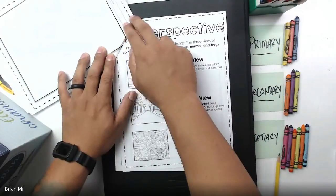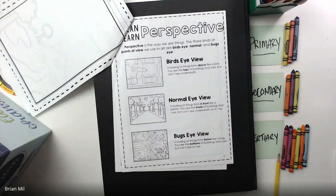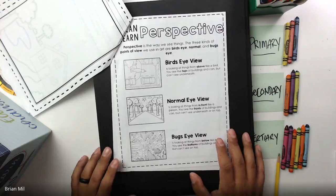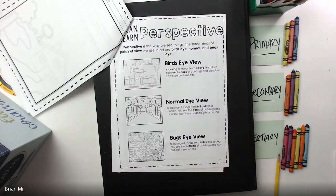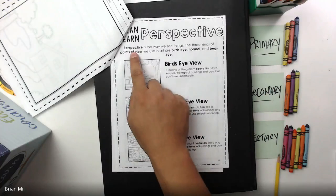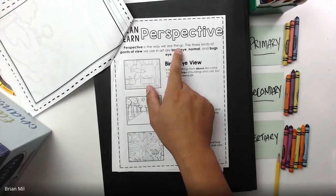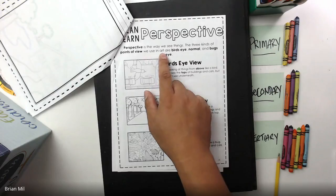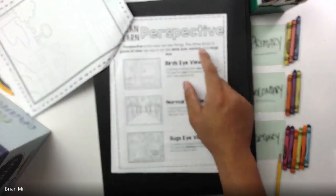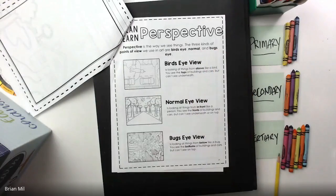Perspective is one of those principles of design I want to talk about, and there are three different types. Perspective is a way that we see things, and the three kinds of point of view we use in art are bird's eye, normal, and bug's eye. So let's talk about all three.